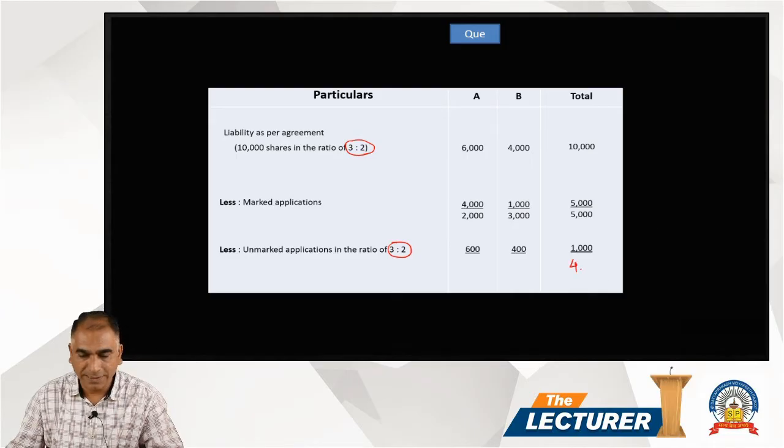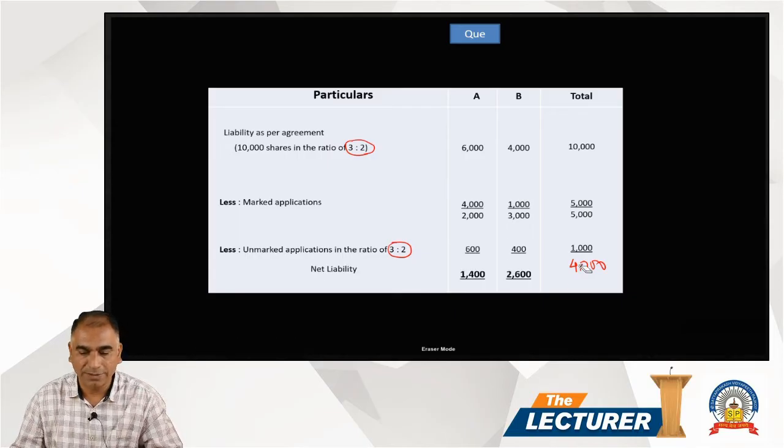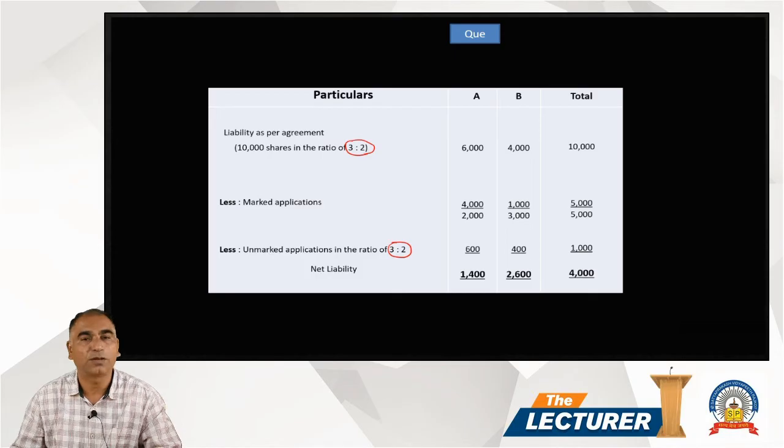The remaining deficit is 4,000 shares. A's deficit will be 1,400, B's 2,600, and that is 4,000. This is your answer.